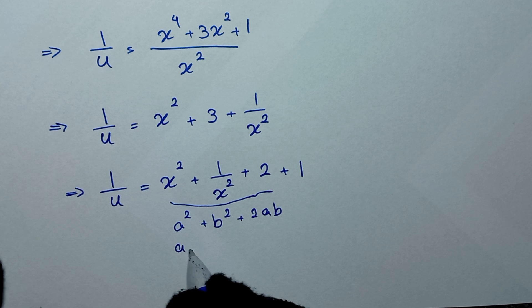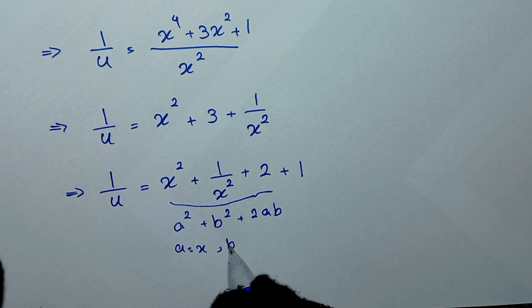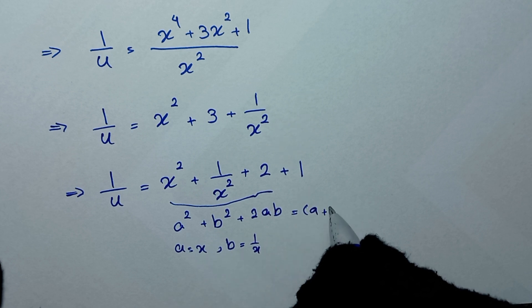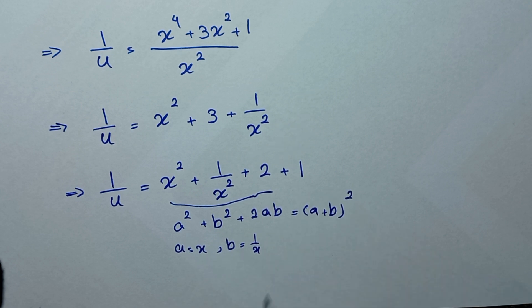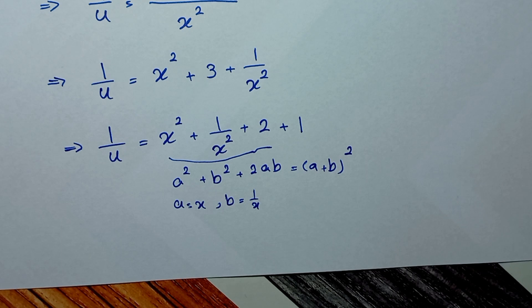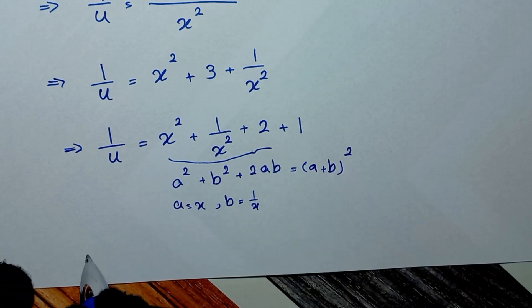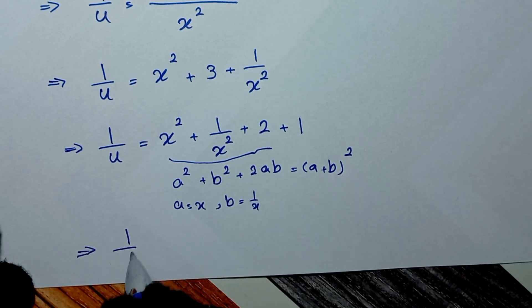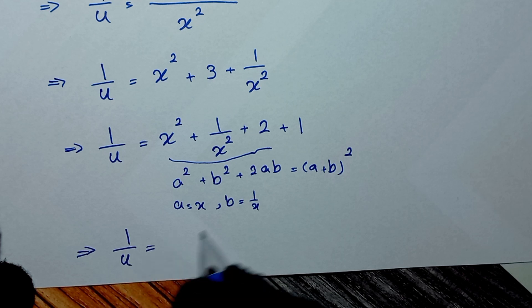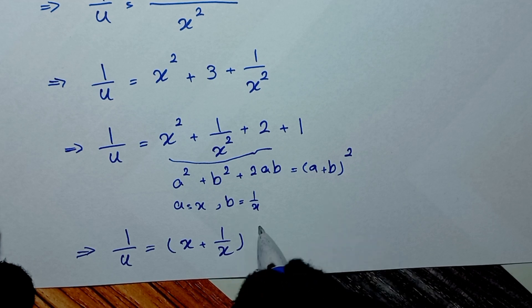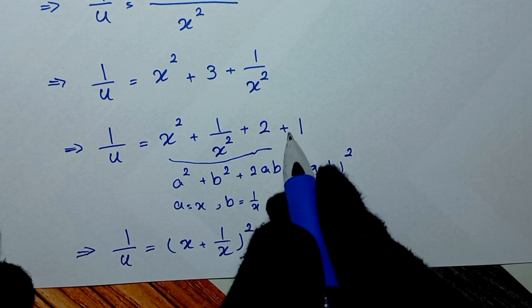Here a is x and b is 1 over x, so this equals a plus b to the power of 2. Therefore 1 over u is equal to x plus 1 over x, all squared, plus 1.